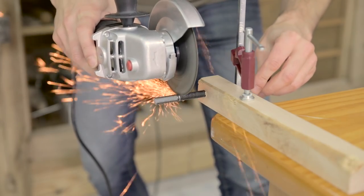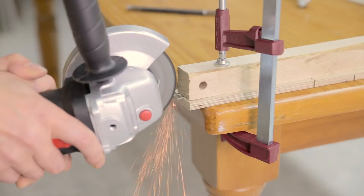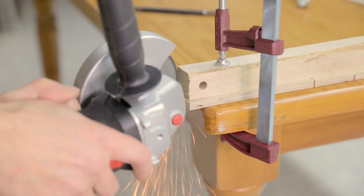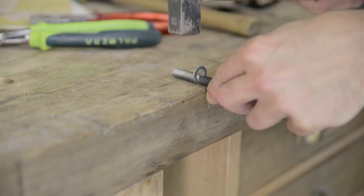I make a groove in the threaded rod with an angle grinder and cut open a washer to put it in. It will serve as a stop to prevent the wheel from moving.